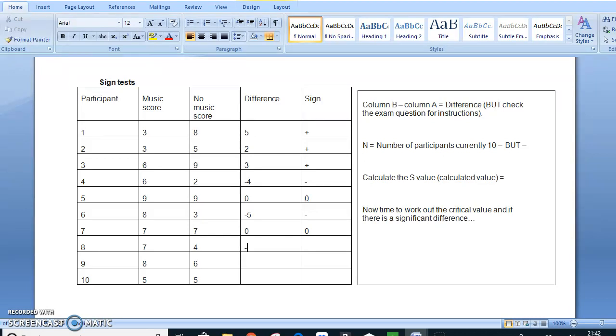Again, we have another 0, so this one doesn't count. 4 minus 7 is minus 3. 6 minus 8 is minus 2. And then the last one is 0. So now we've done that bit.